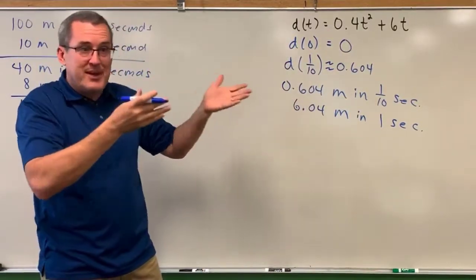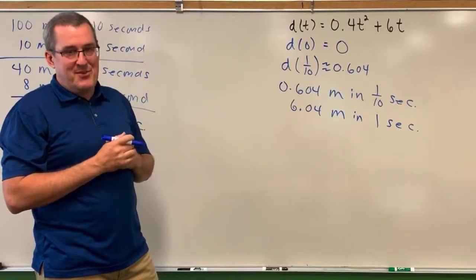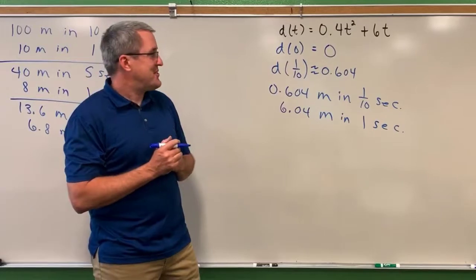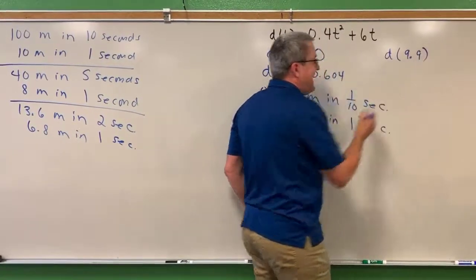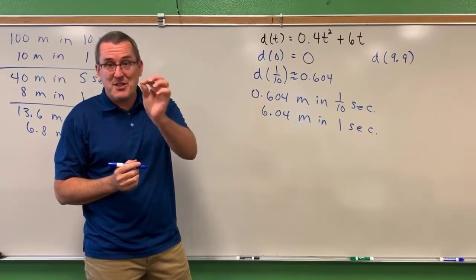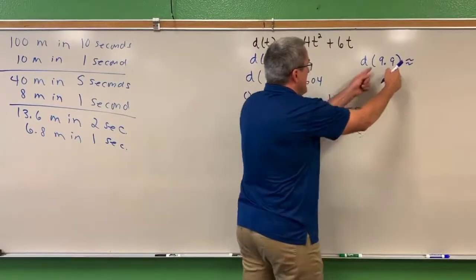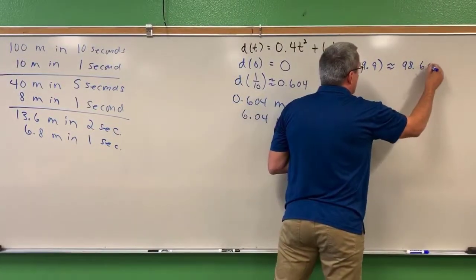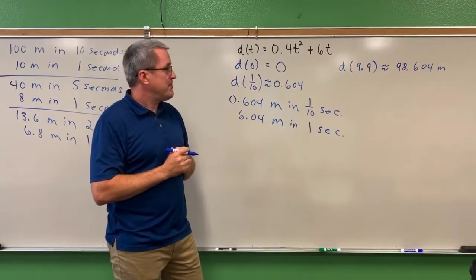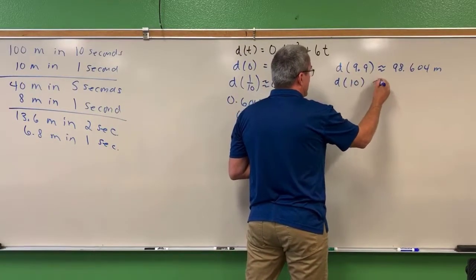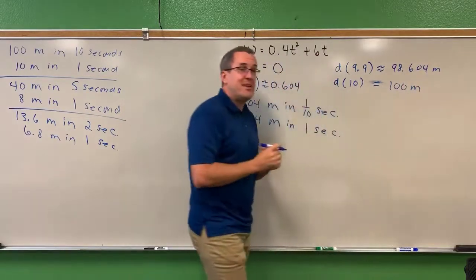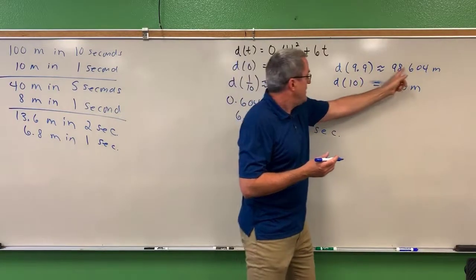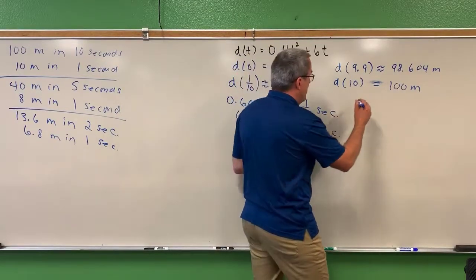What about the end of the race as he's crossing the finish line? Let's look at the last tenth of a second — where was the runner 9.9 seconds into the race? If you replace time with 9.9 seconds, he was 98.604 meters down the track. At 10 seconds he finished the full 100 meters. So in that last tenth of a second, he ran from 98.604 to 100 meters — that is 1.396 meters.